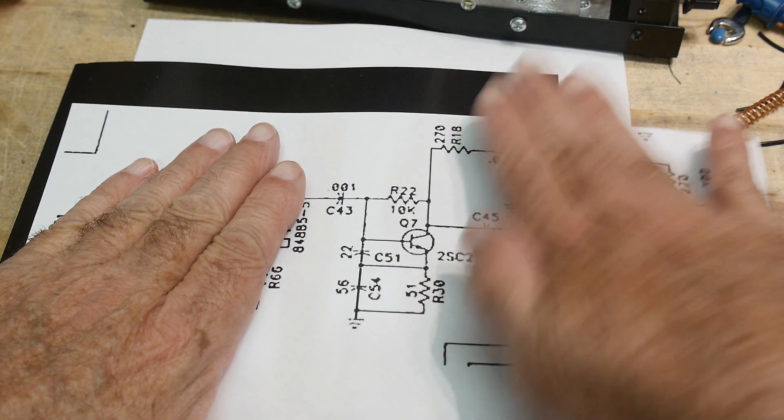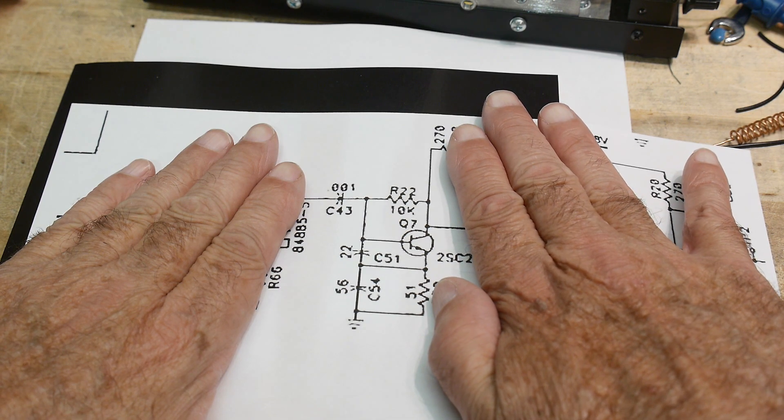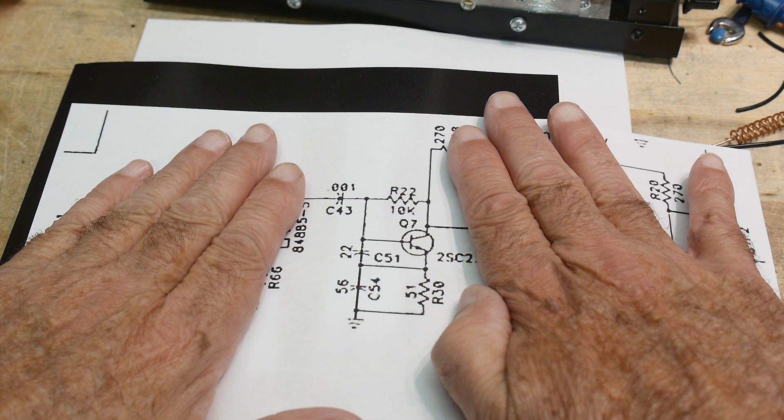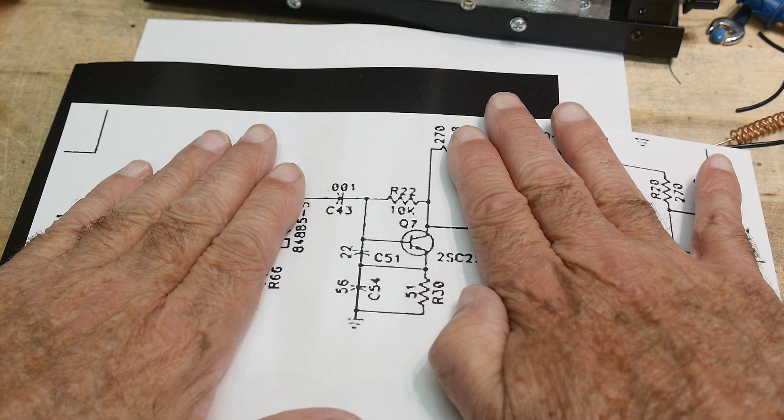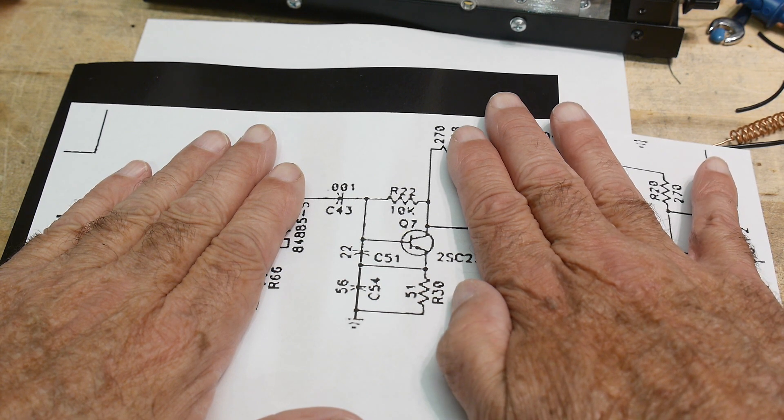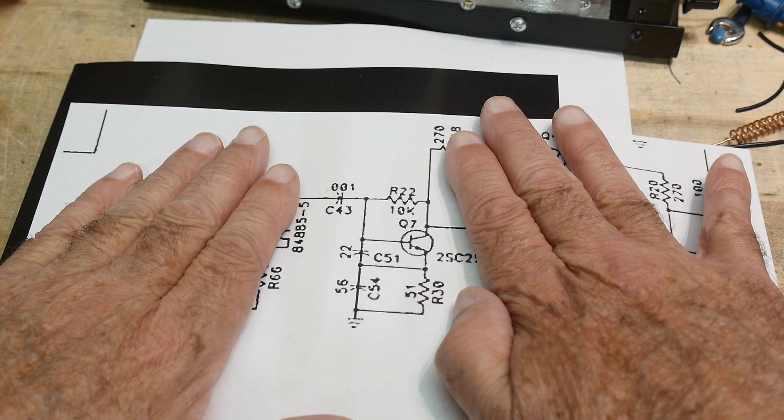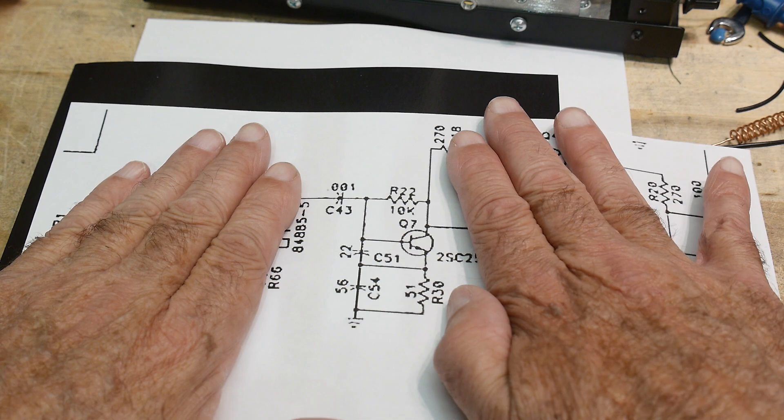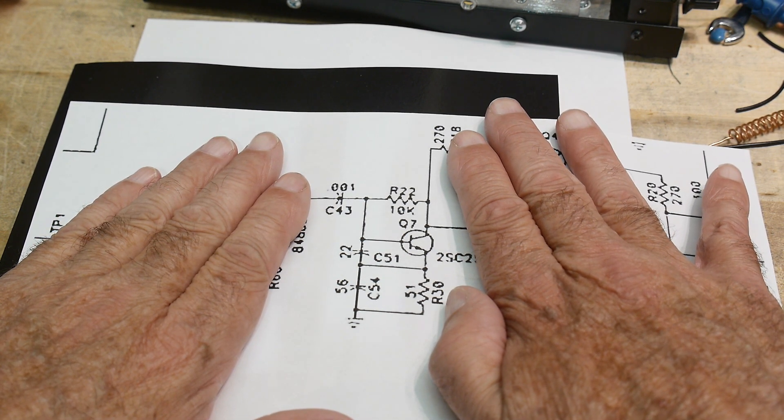So if you take a test for ham radio, you will be asked to identify the types of oscillators. I think there's three types you need to identify: a Pierce, a Colpitts, and a Hartley, if I remember right. The way you remember them is if you see a crystal, you know it's a Pierce. If you see two capacitors, you know it's a Colpitts. And if you see an inductor, you know it's a Hartley.